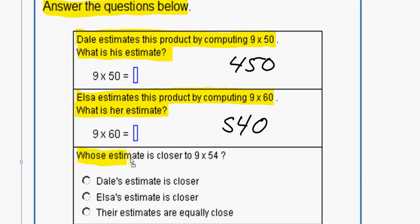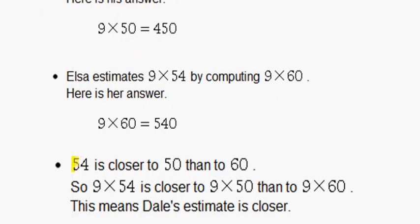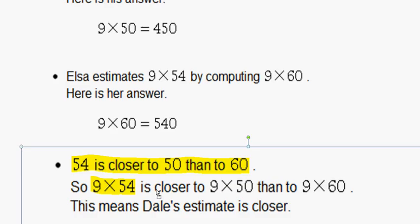So whose estimate is closer to 9 times 54? Since 54 is closer to 50 than to 60, 9 times 54 is closer to 9 times 50 than 9 times 60. This means Dale's estimate is closer.